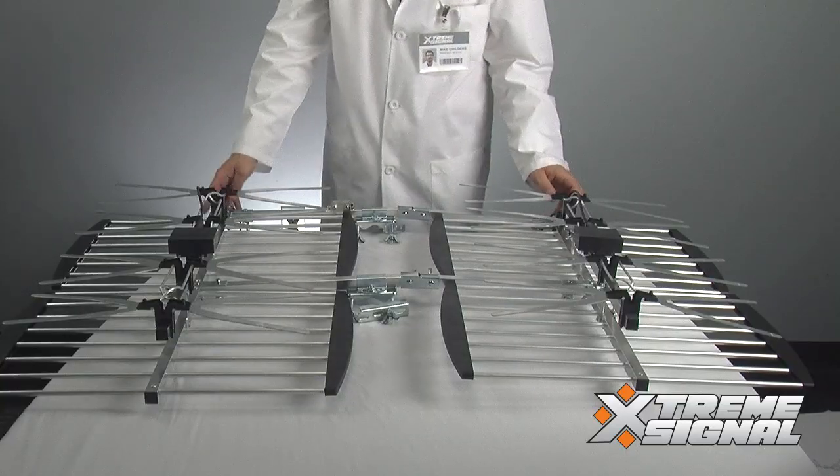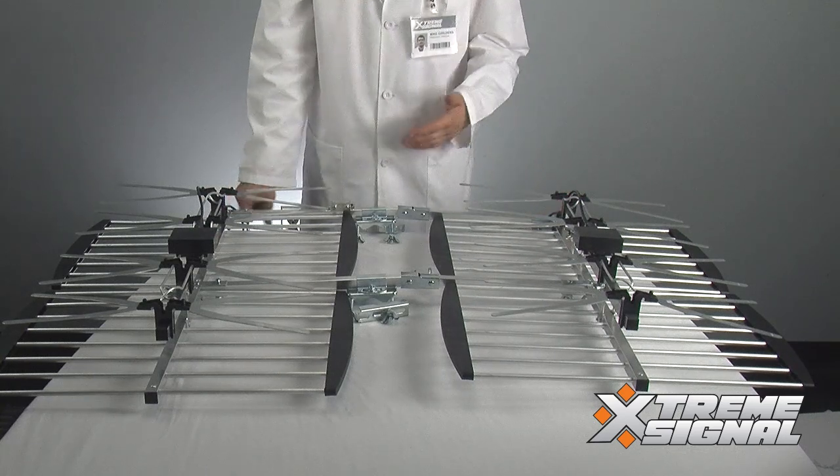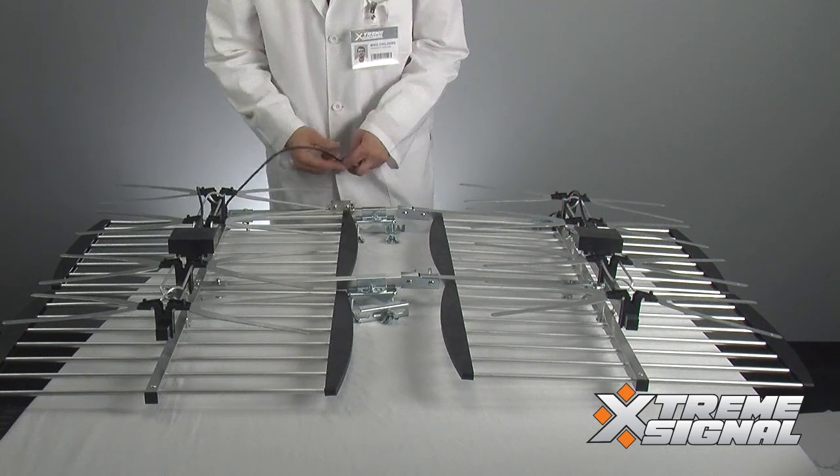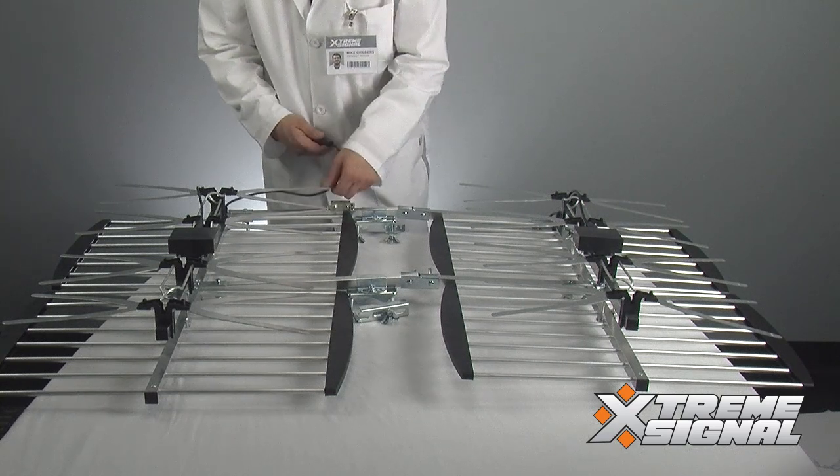Once you have each of those secured, you're actually going to run them both into what looks to be a splitter, but is used here as a combiner to combine the signal from both sides of the antenna.